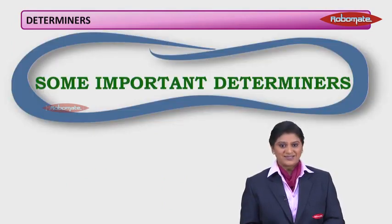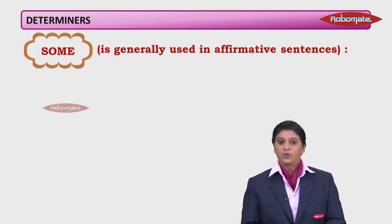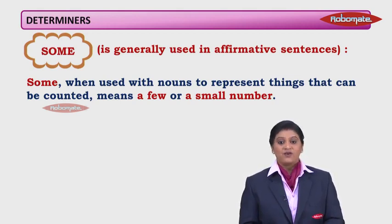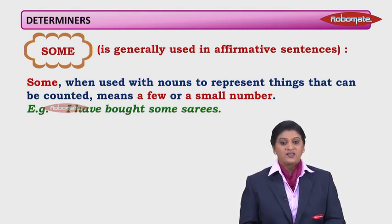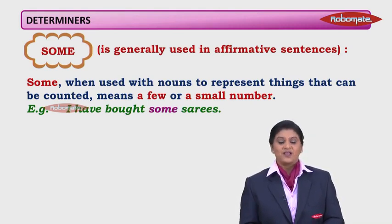Let us look at some important determiners. 'Some' is generally used in affirmative sentences — sentences where negative words like no, not, never are not used. When 'some' is used with nouns representing things that can be counted, it means a few or a small number. For example, 'I have bought some sarees' — sarees is a countable noun, and 'some' here means a few or a small number of sarees.